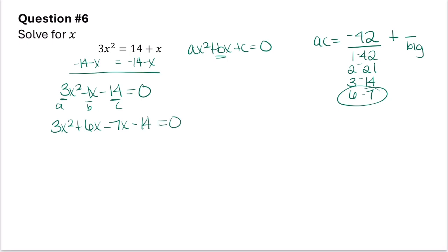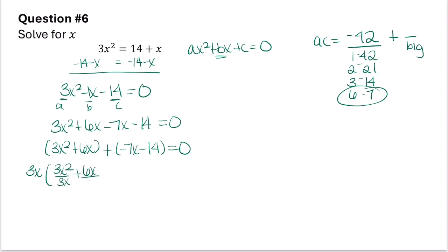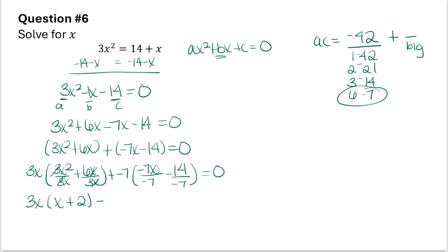I'll put these terms into two groups: 3x squared plus 6x, and negative 7x minus 14, equals 0. Factoring out the GCF from each group: from the first group I factor out 3x to get 3x times x plus 2. From the second group I factor out negative 7 to get negative 7 times x plus 2. So in factored form I have x plus 2 times 3x minus 7 equals 0.